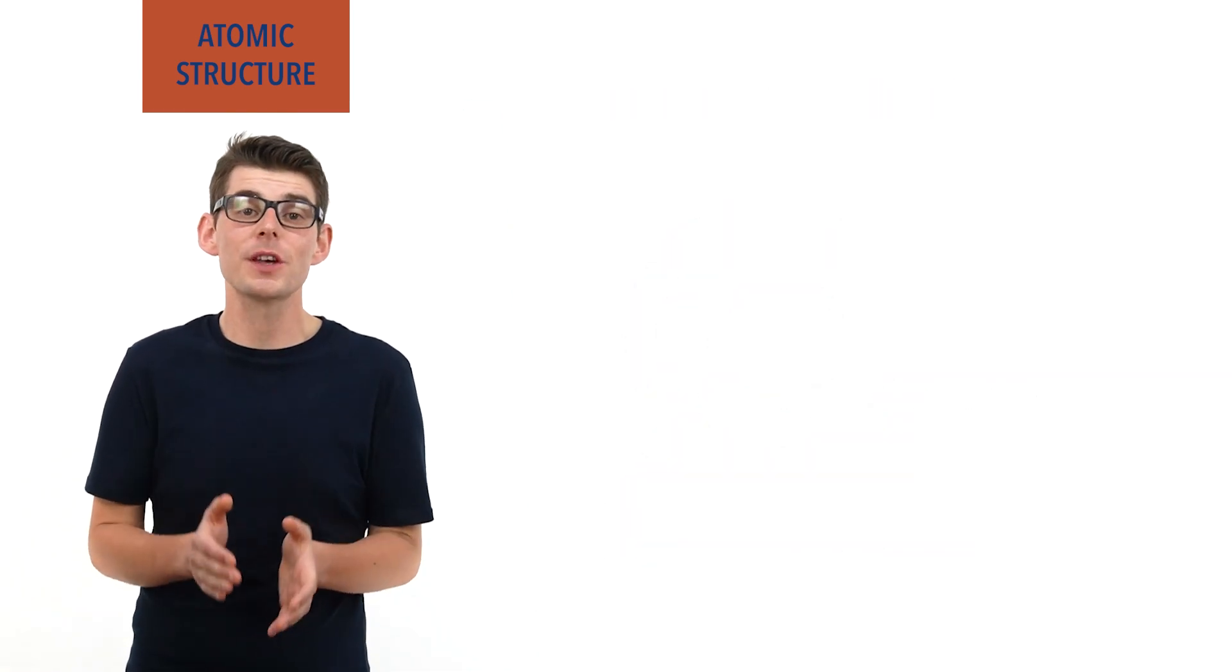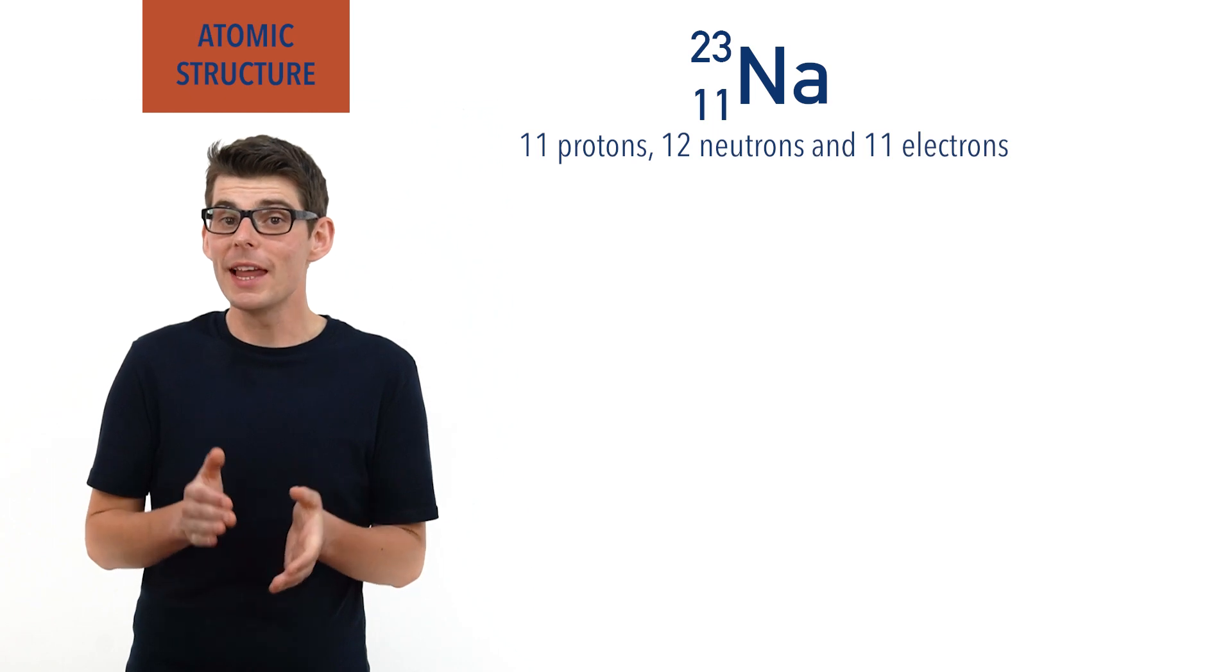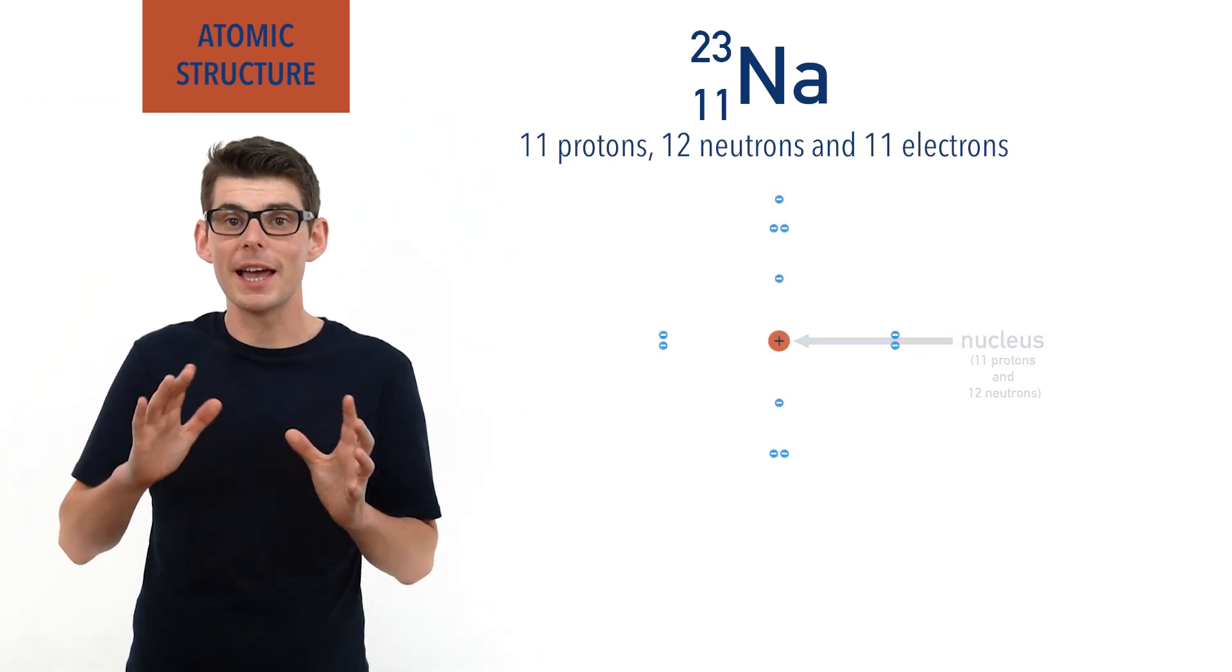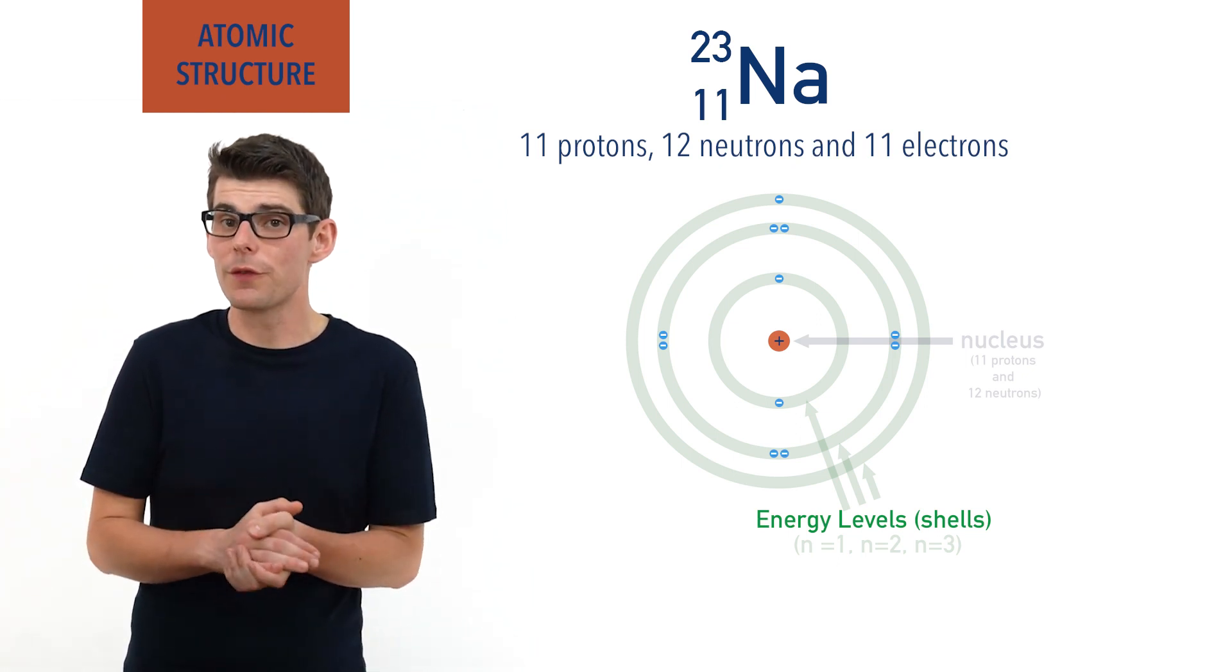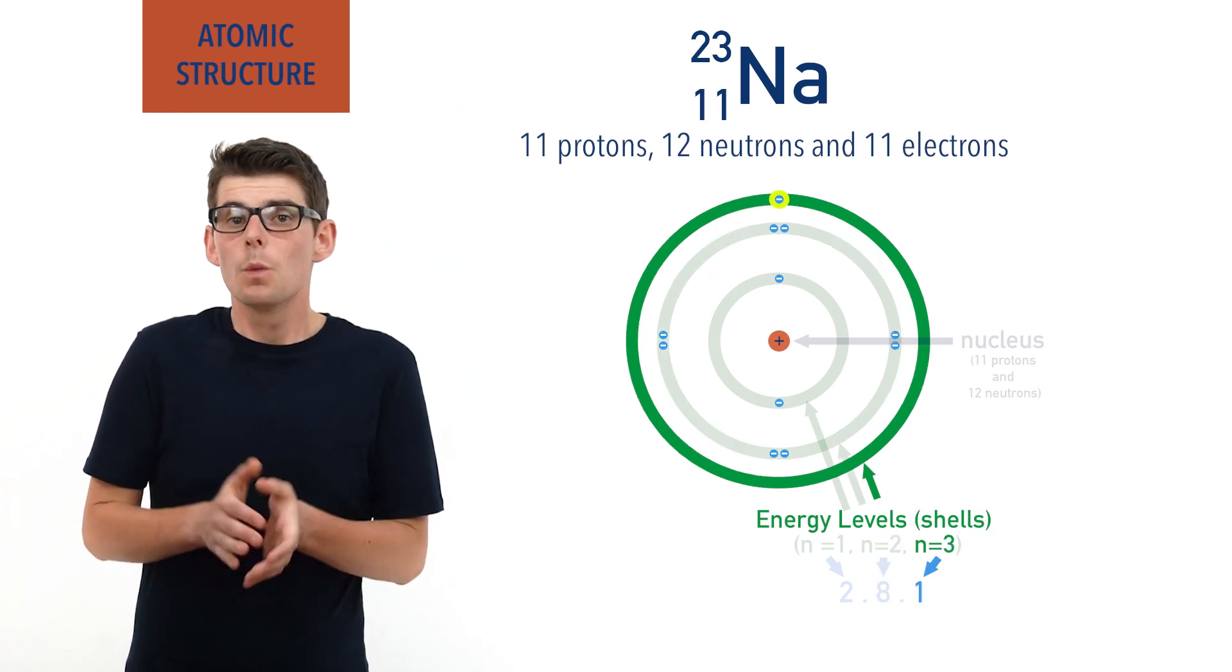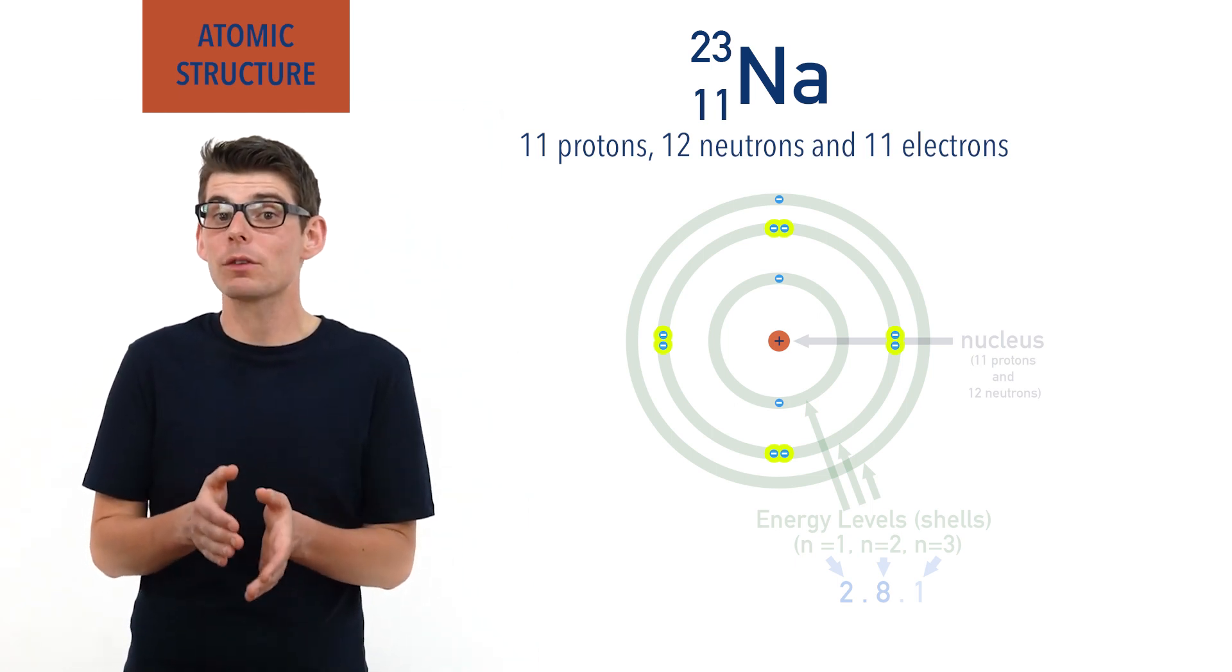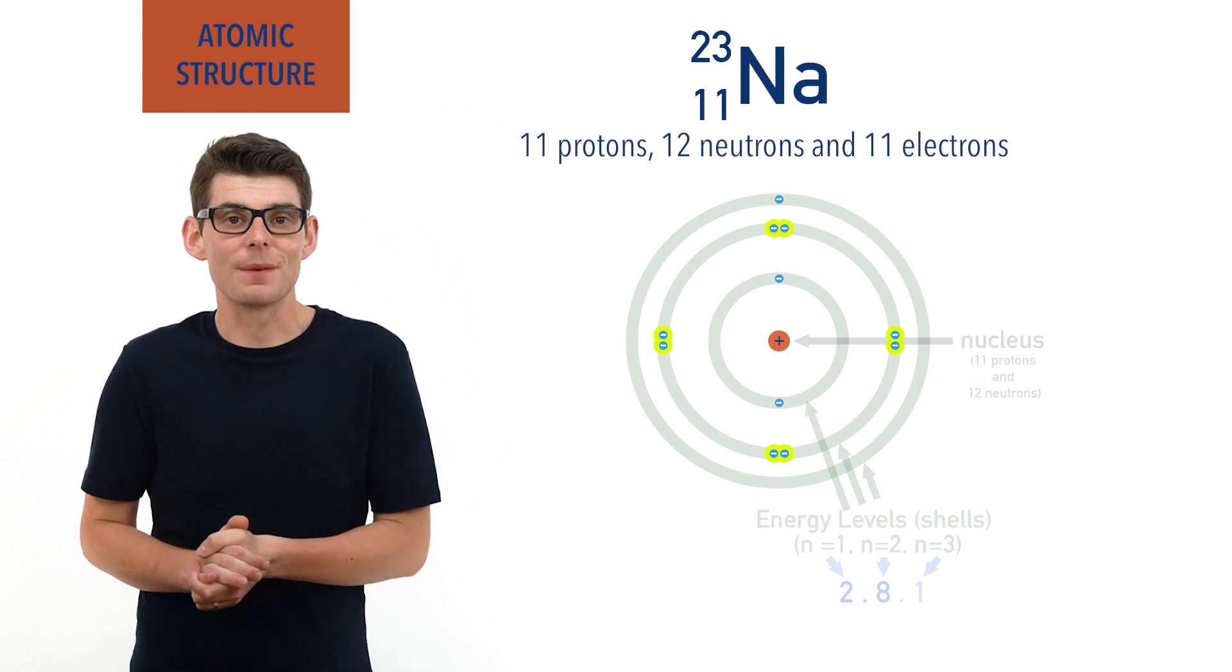For example, atoms of sodium have 11 protons, 12 neutrons, and 11 electrons. The 11 protons and 12 neutrons are held tightly together inside the atom's nucleus, and the 11 electrons fill up the energy levels or shells that are around it. There are two electrons in the first energy level, eight in the second, and one in the third. We draw the electrons in pairs, and each pair represents an orbital. Electron orbitals, subshells, and how electrons occupy them have been covered in much more detail in separate videos. Check the links in the description below.